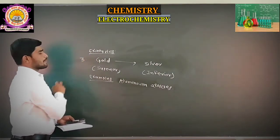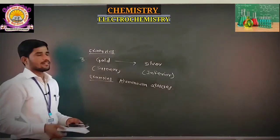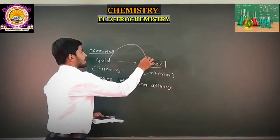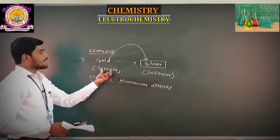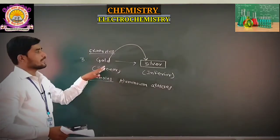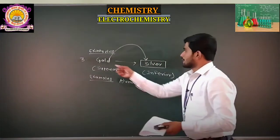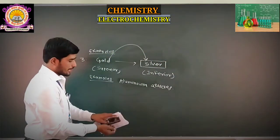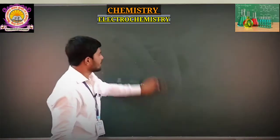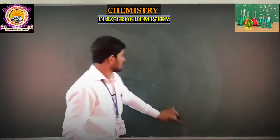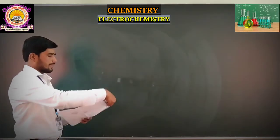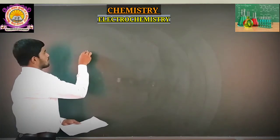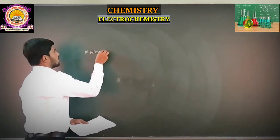Another famous example that we see most of the time in our surroundings, in our homes, is the plating of gold metal on silver metal. For cost purposes, we plate this superior metal on that inferior metal. These are the different types of examples, and we will now take one example in detail — the electroplating of silver.